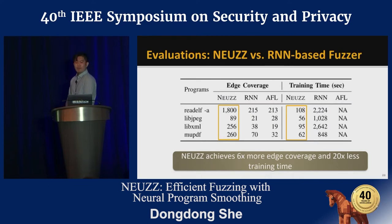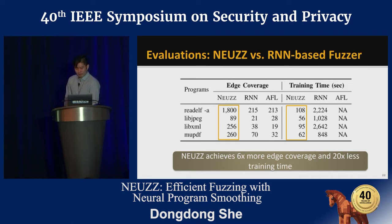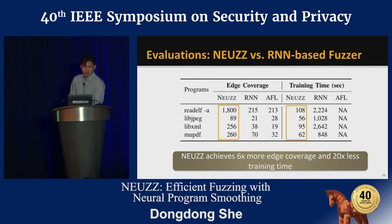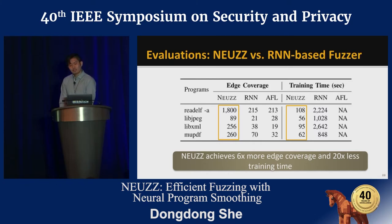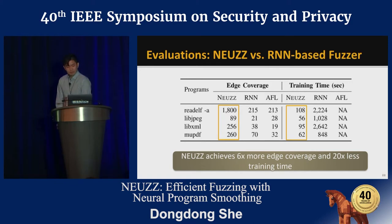We also compared NOOS with another learning-based fuzzer, an RN-based fuzzer, which uses a neural model to learn critical parts of program inputs and filter out mutations that do not touch the critical parts. We ran NOOS on four programs evaluated in their paper for one million fixed mutations and compared edge coverage and training time. NOOS achieves six times more edge coverage and 20 times less training time.